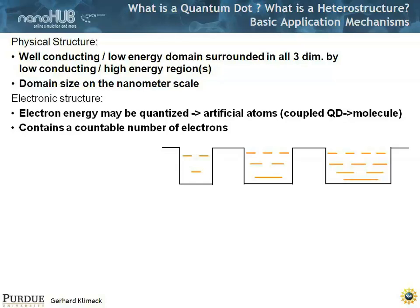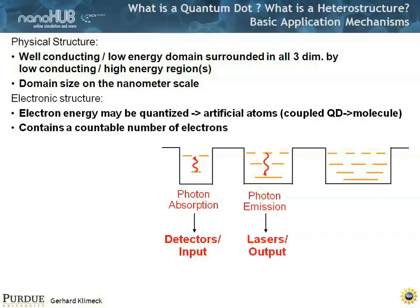You can string these things together where you might have multiple quantum dots — this is a one-dimensional picture. Why would you care? Because in this artificial atom you can tune these eigen energies of the photon absorption spectrum, so you can build detectors in a sense. Light comes in, you sense it — that's an input. But you can also have an electron fall down in energy and emit a photon — that's a laser, an optical output.